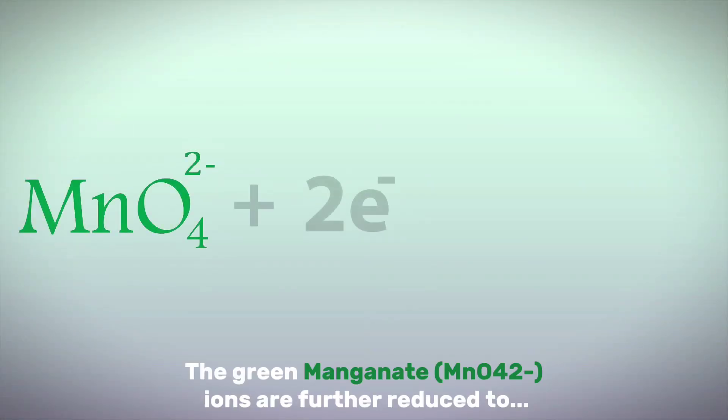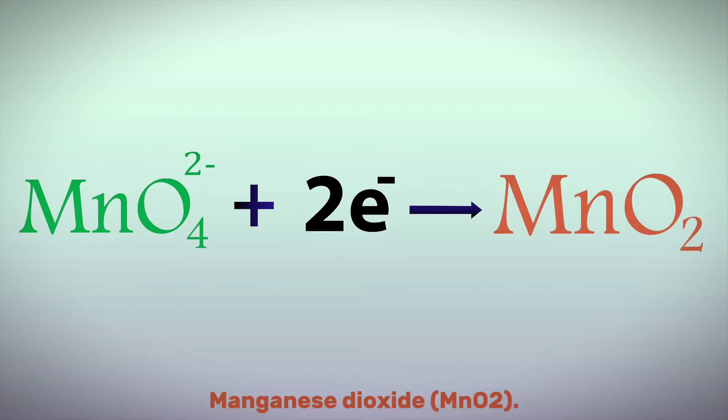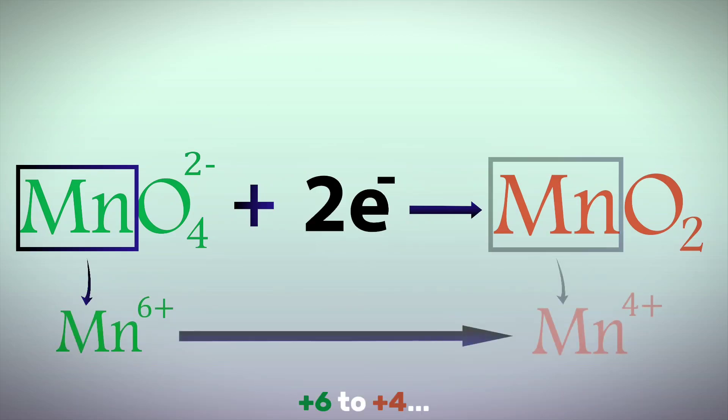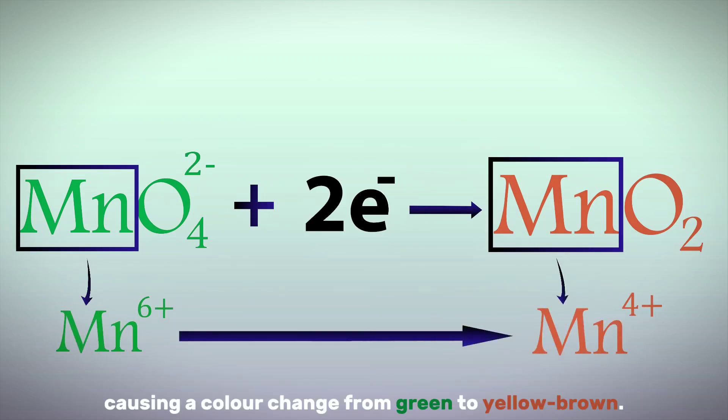Anyways, the green manganate ions are further reduced to manganese dioxide. Here the oxidation state of manganese changes from plus 6 to plus 4, causing a color change from green to yellow brown.